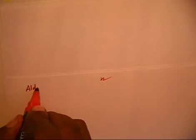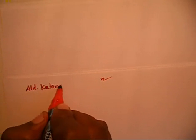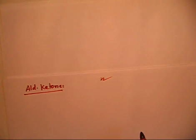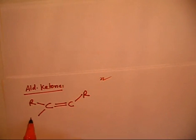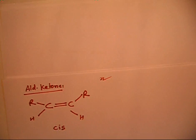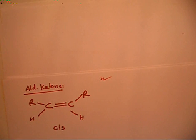This problem is from the aldehyde ketone chapter. It involves a trans-alkene and a cis-alkene. The question states that trans-alkenes or cis-alkenes are converted into their cis or trans isomers respectively on epoxidation, followed by treatment of the epoxide with PPh3.